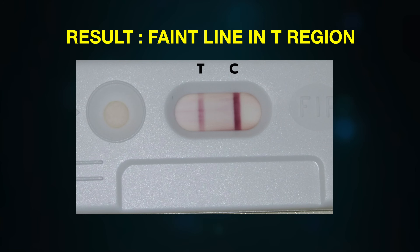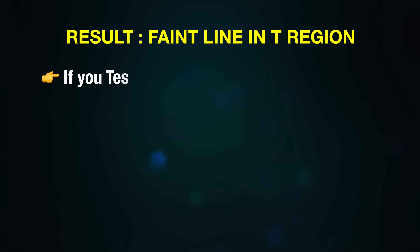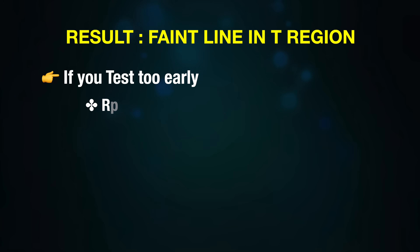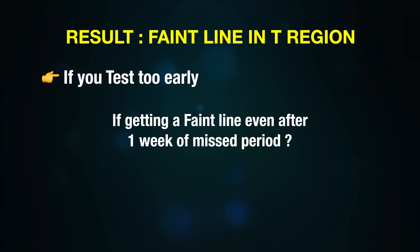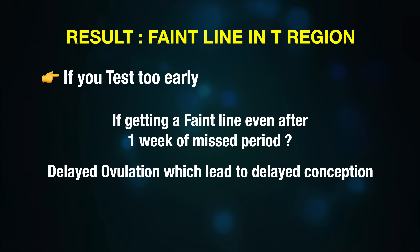Other scenarios you may encounter: you may find a faint line at the test region. If you check too early, the beta HCG has not increased much and you could get a faint line — repeat the test again after three to four days. If the woman checks even after one week past the missed period and still gets a faint line, the reason could be delayed ovulation, which led to delayed conception.